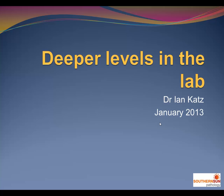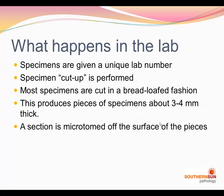When a specimen arrives in the laboratory, it's given a unique lab number and then specimen cut-up is performed. Most specimens, especially skin ellipses, are cut up in a bread-loaf fashion, and this produces pieces of specimen about 3 to 4 millimeters thick. A section is a piece of tissue that is microtomed with a very sharp knife off the surface of each piece.